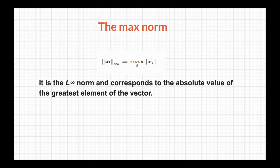The last type of norm is the max norm. Here we replace the value of p with infinity, so it is denoted as the L-infinity norm, or max norm. It corresponds to the absolute value of the greatest element of the vector.